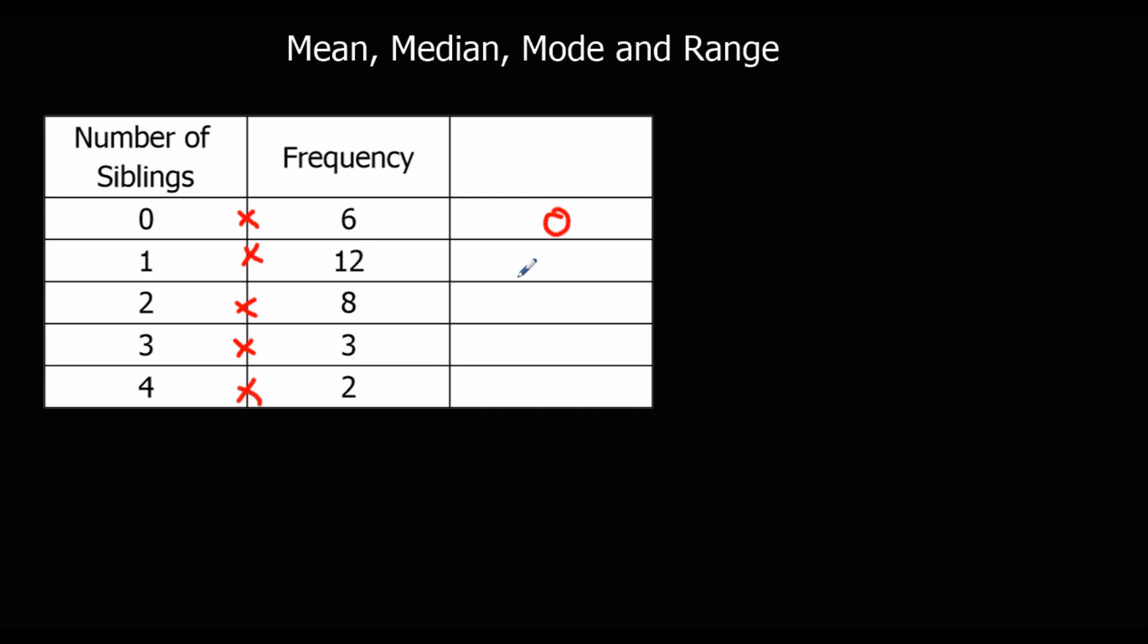12 people had 1 sibling, so that's 12. 8 had 2, 8 twos are 16, 3 threes are 9, and 4 twos are 8.